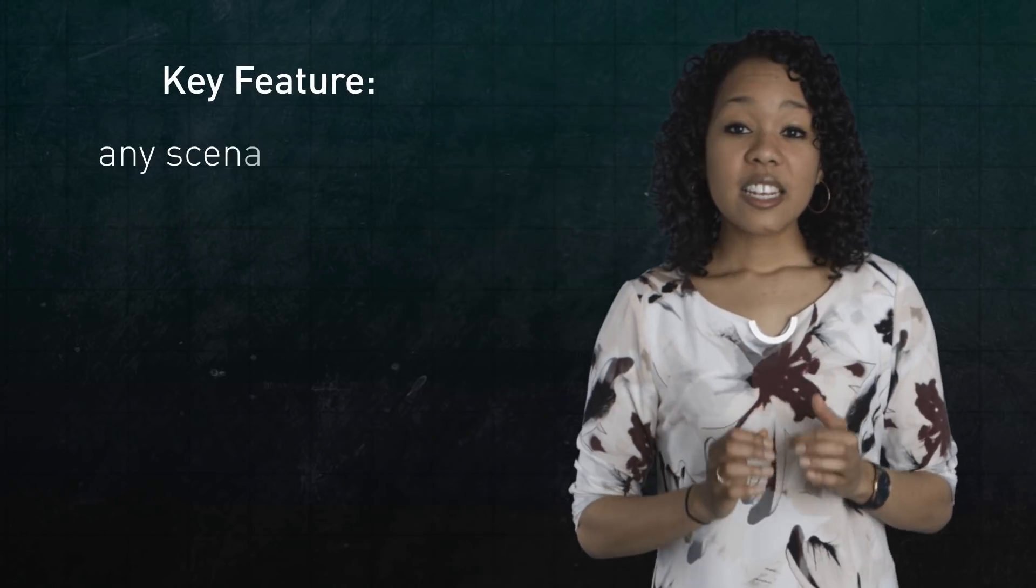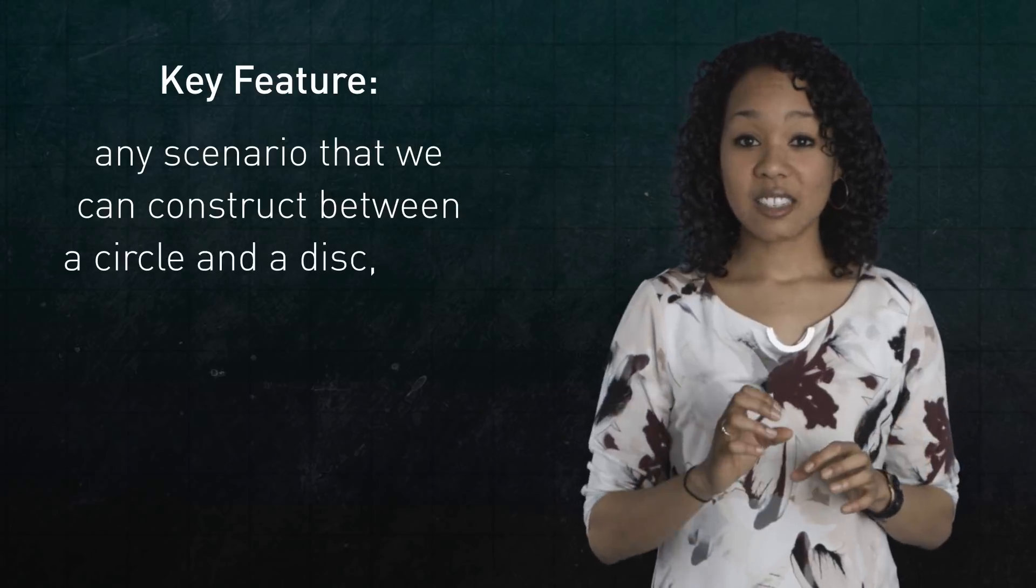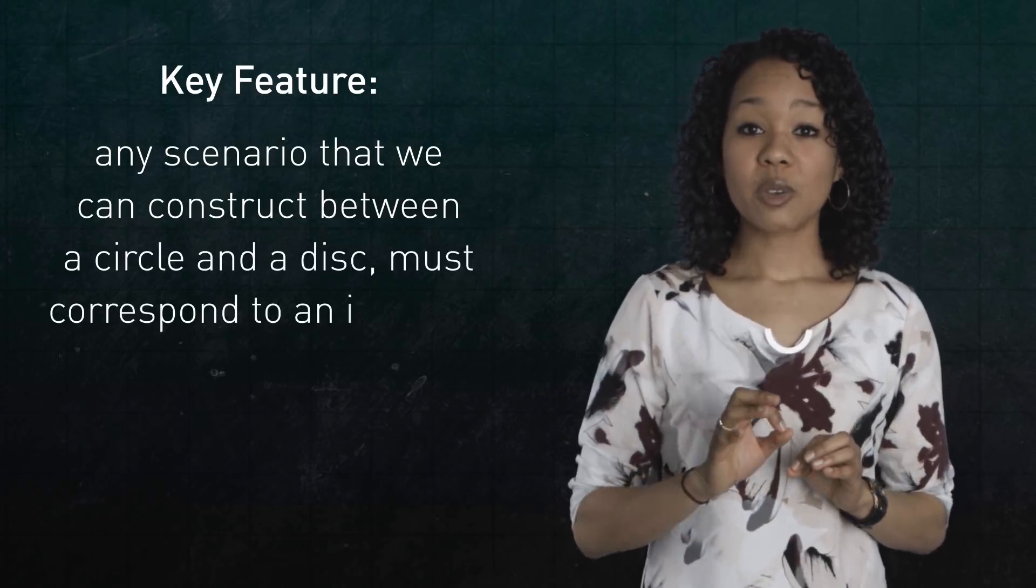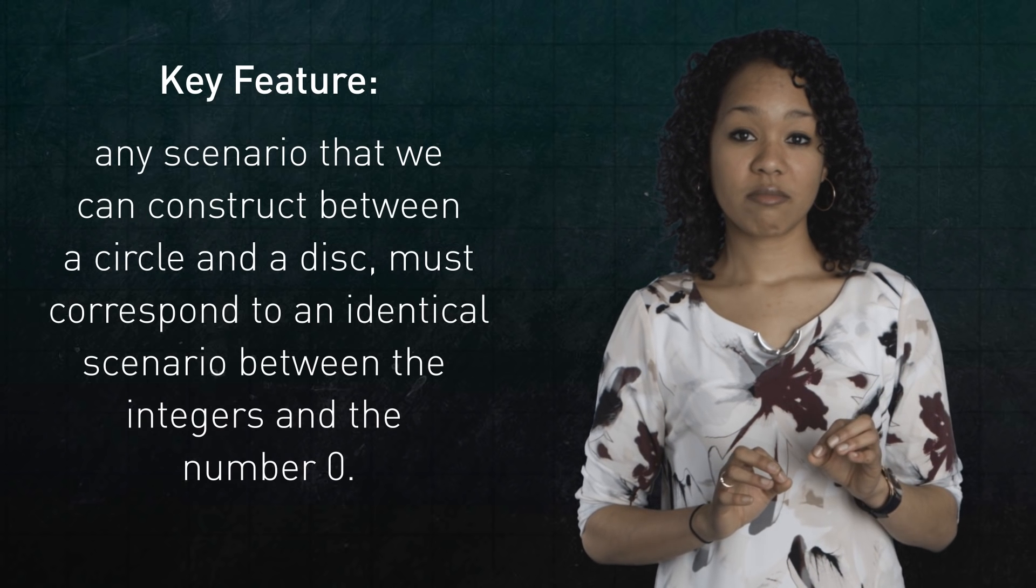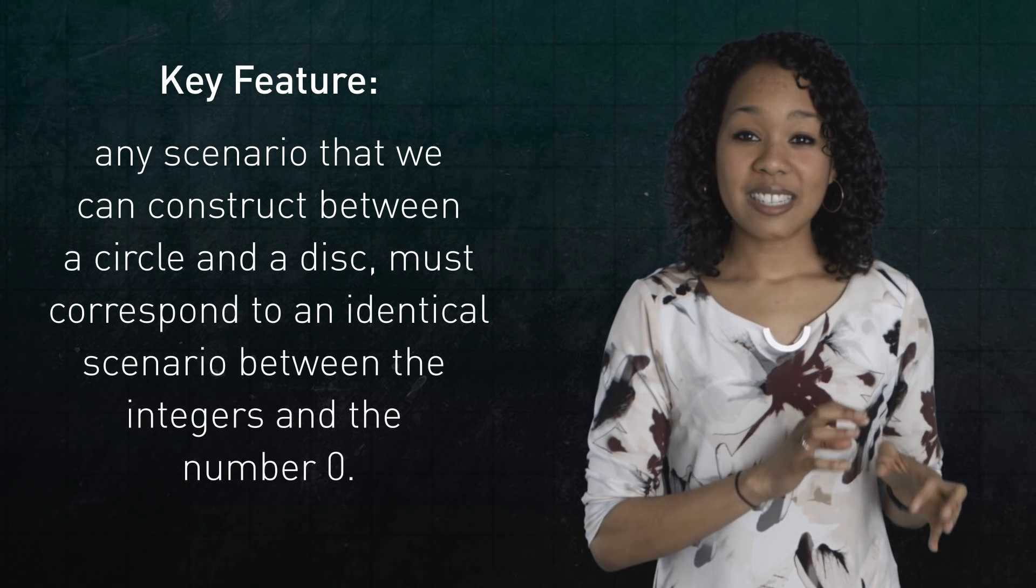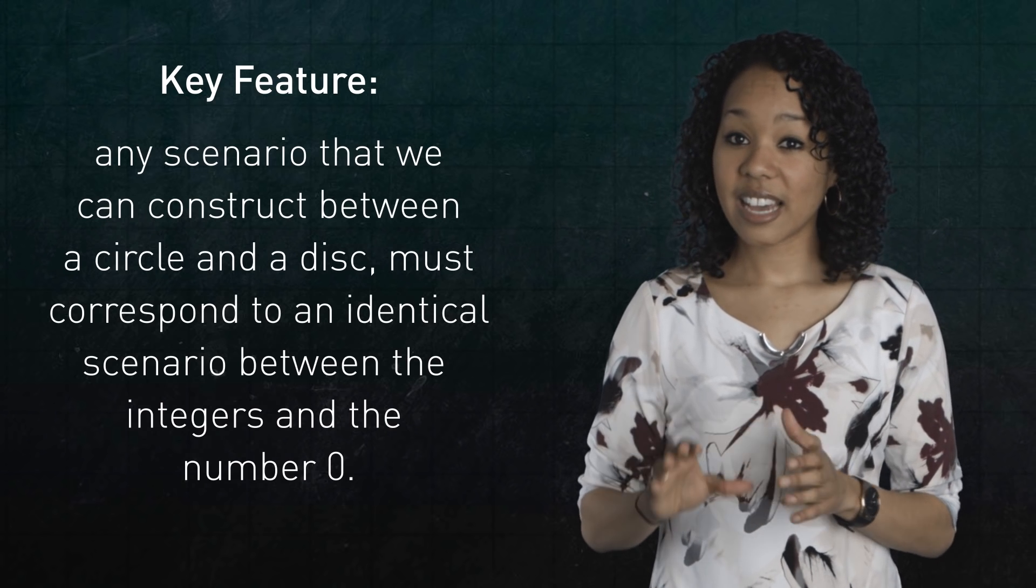Okay, here's the key feature of these assignments. Any scenario that we can construct between a circle and a disk must correspond to an identical scenario between the integers and the number zero. In short, whatever happens in the land of topology should be mirrored in the land of algebra. That's the key.